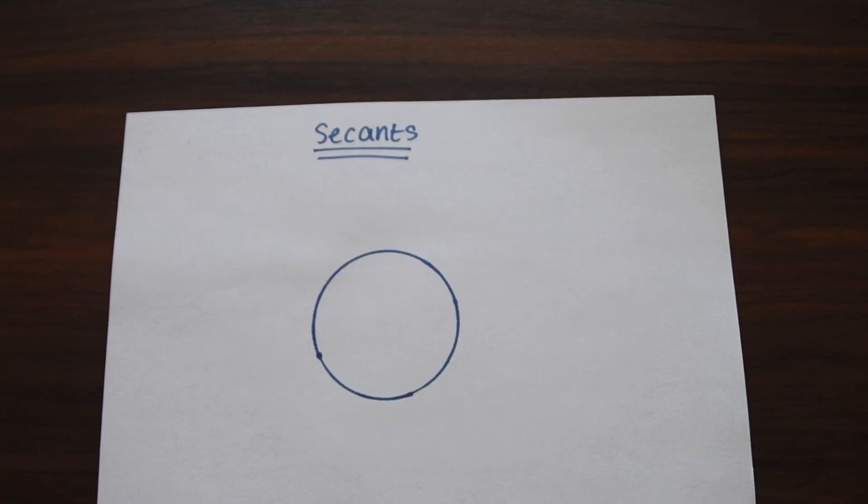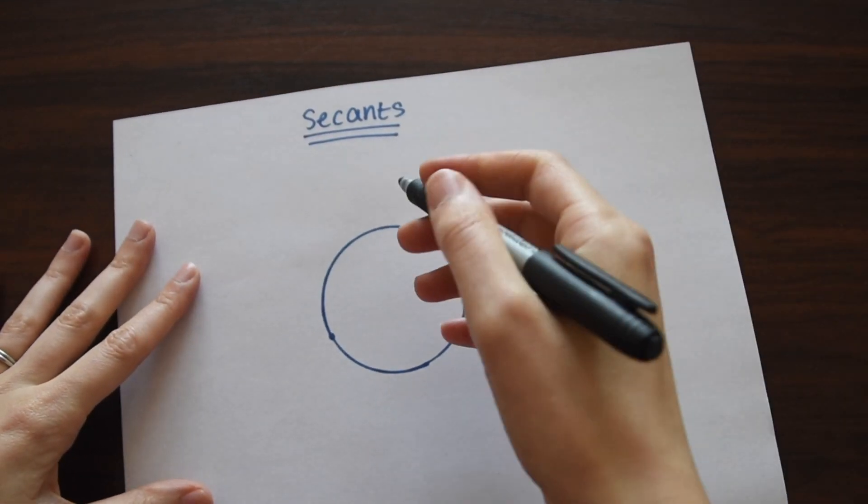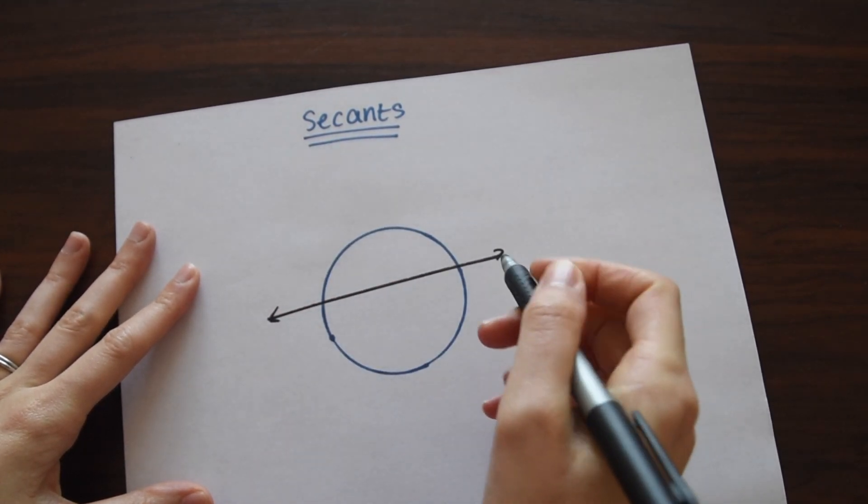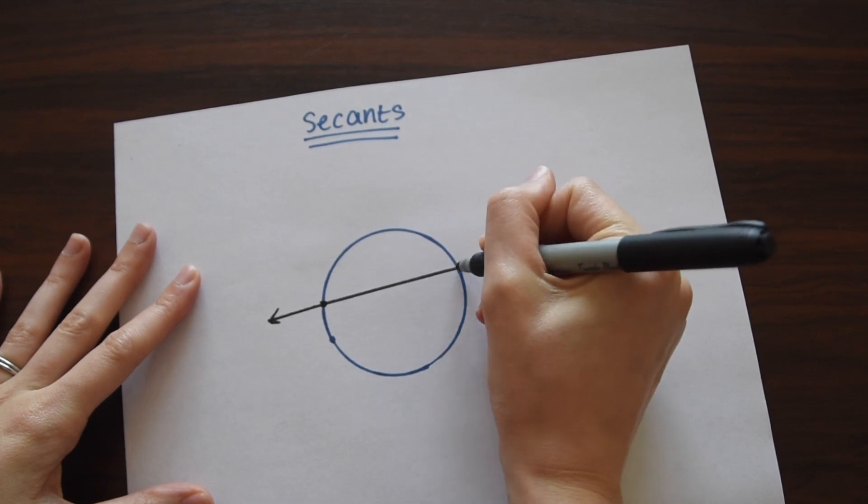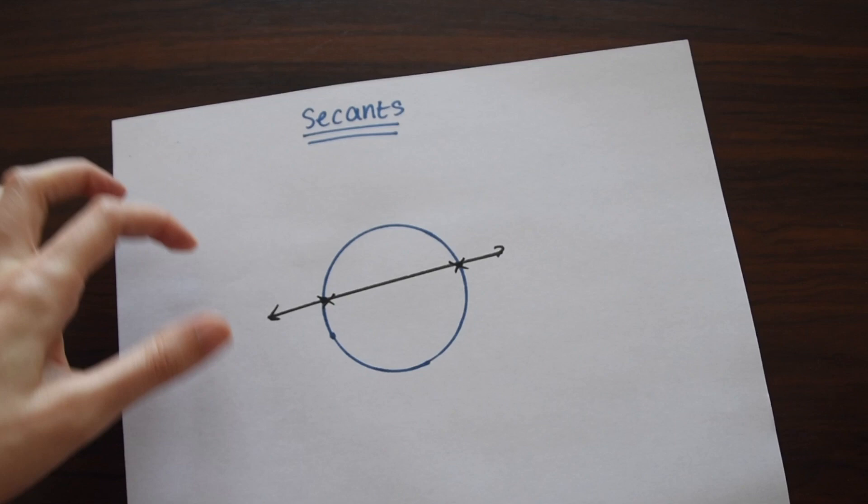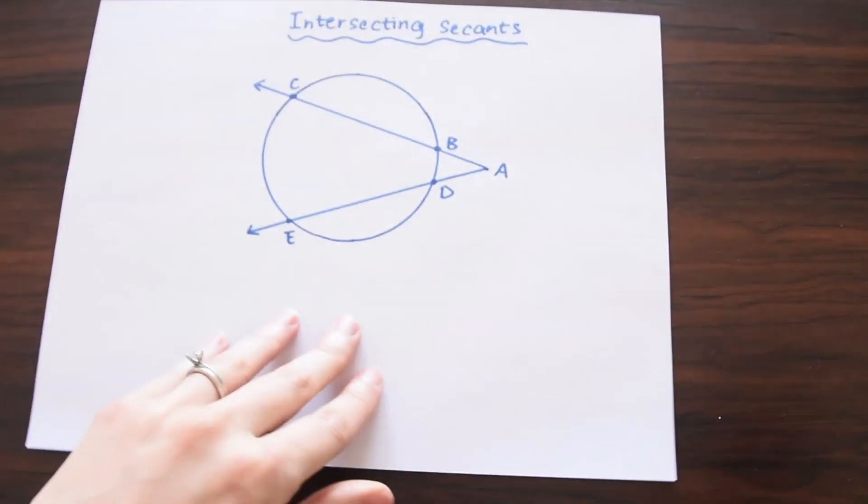So before we go any further, let's first look at what a secant is. Just as a reminder, a secant is a line that goes through the circle and hits the circle at two points. So notice this line hits the circle here and it hits it here. That's all a secant is.